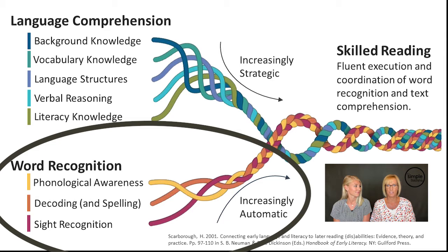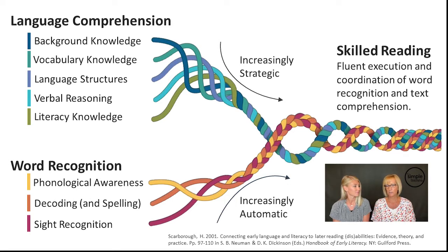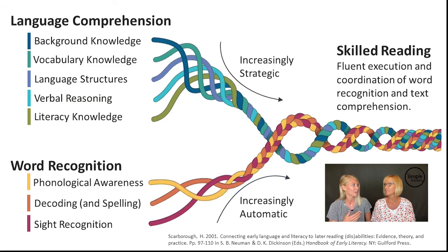The bottom part of the rope is our word recognition part. Just because they're separate pieces — separate strands coming together — don't ever think that means they're taught separately. They are separate skills, and we can explicitly teach them individually, but they should come together in application at the end of every lesson. When we move to word recognition, we don't want to focus on just word recognition. Same with language comprehension — we don't want to focus on just those either. We really need the whole rope. That's why I love when we state objectives: 'Good readers do this to understand what we read,' to be a skilled reader — because that is why we're doing it.